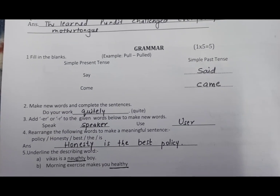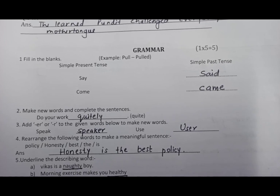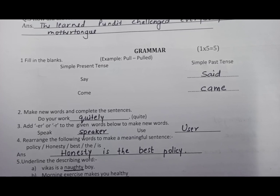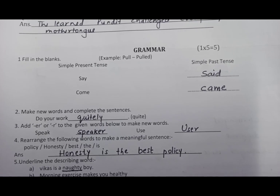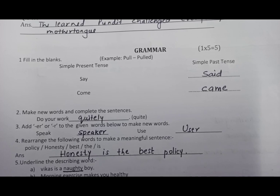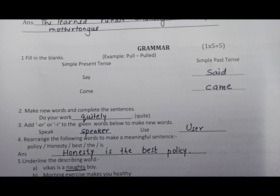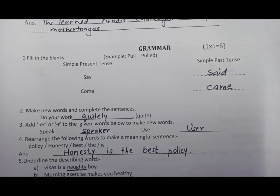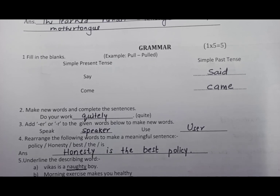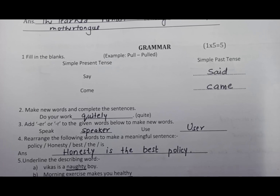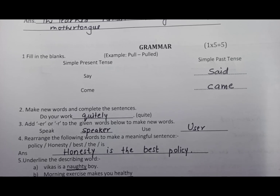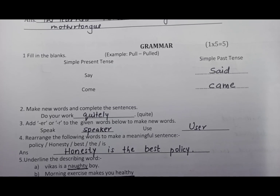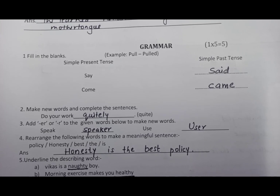Coming to the grammar section — fill in the blanks. Simple present tense and simple past tense: pull → pulled. Present tense mein word diya hai, you have to change it to past tense — say will become said, and come will become came. Make new words: add 'er' or 'r' to the given words — speak → speaker; use → user.